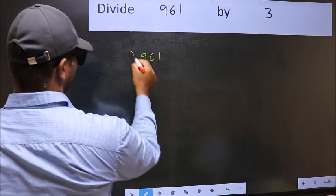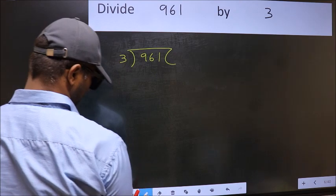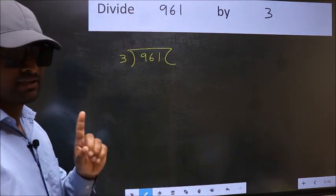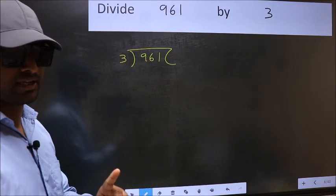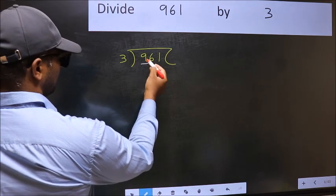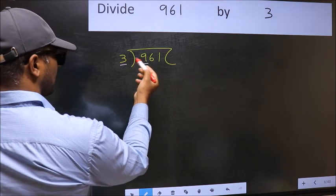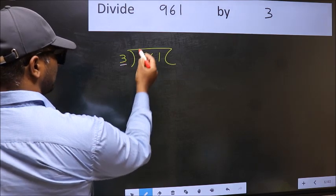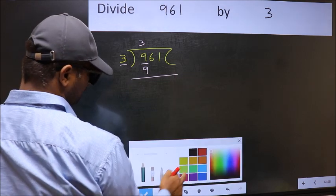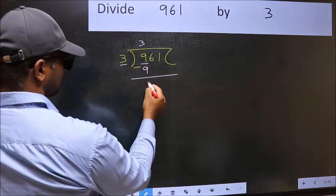961 and 3 here. This is your step 1. Here we have 9 and here 3. When do we get 9 in 3 table? 3 3's is 9. Now you should subtract. 9 minus 9 is 0.